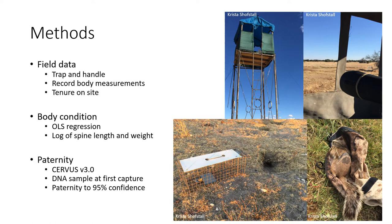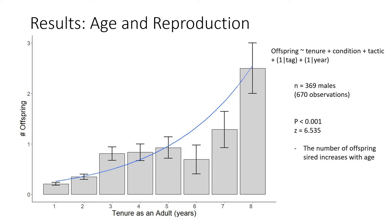We calculated body condition using the residuals of an ordinary least squares regression of spine length and body weight, and paternity was assessed using computer software and assigned with 95% confidence. To look at reproductive success, we used a general linear mixed model that included tenure, body condition, and tactic, while using squirrel ID and year as random effects.